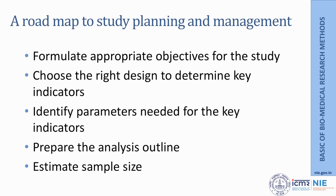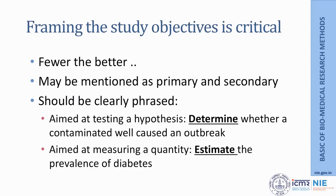It all starts with formulating an appropriate objective for the study, then choosing the right design to determine the key indicators. A proper decision about what kind of study is required to answer the objectives that we have framed is very critical. We also have to identify the parameters needed to estimate the indicators important for this particular study, then prepare the analysis outline. It is also important to estimate the sample size before the study is initiated, because a study conducted on a small sample will not be generalizable.